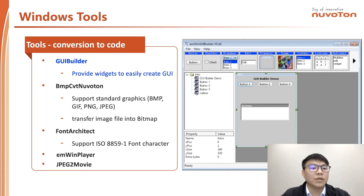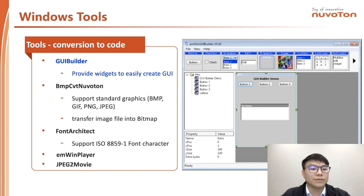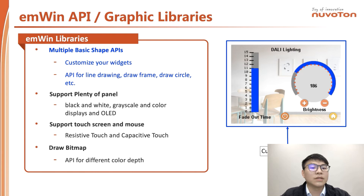BMP Convert is a BMP conversion tool to transfer different image formats, including BMP, GIF, PNG, and JPEG. EN-Wing also supports ISO 8859-1. If you don't like the existing graphics widgets, you can change the skin or use API to customize your own widgets. As shown in the right-side picture, I utilized the API to draw an arc and customize an arc-slide widget.